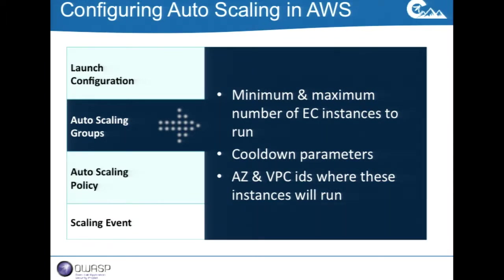You can set maximums as well, in case your application can't handle more web tier components overwhelming the database. There are cooldown parameters you can set — the cooldown period is especially important. By default it's about five minutes, and it's essentially a warm-up period when an instance comes up and starts accepting traffic. During that time you don't want to look at CloudWatch metrics and trigger more scaling because obviously CPU will be hot as the instance starts up. You wait for things to settle before checking whether to spin up additional instances.